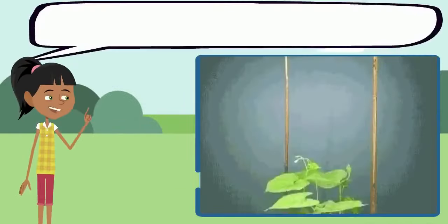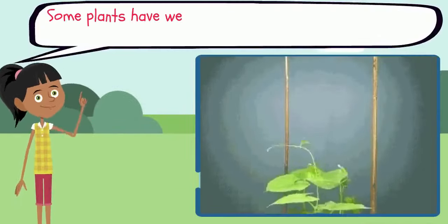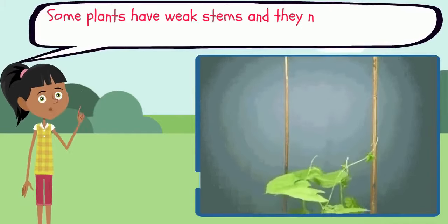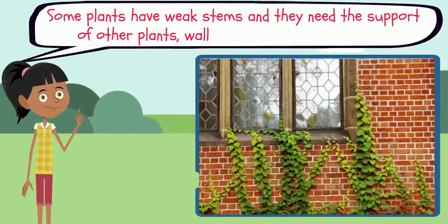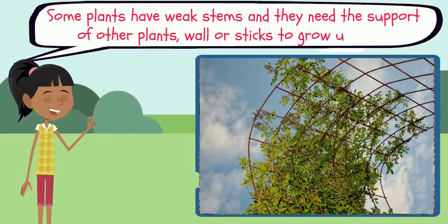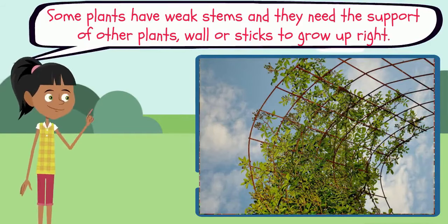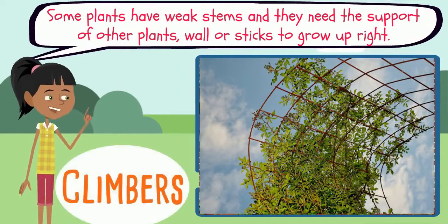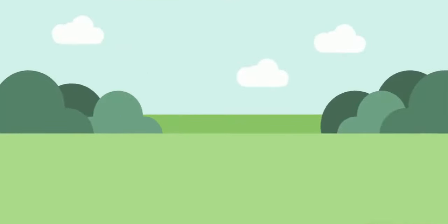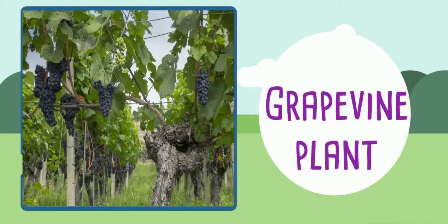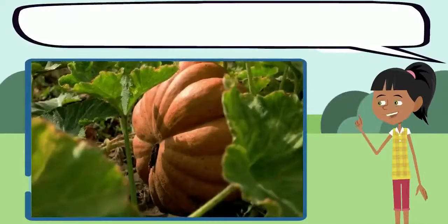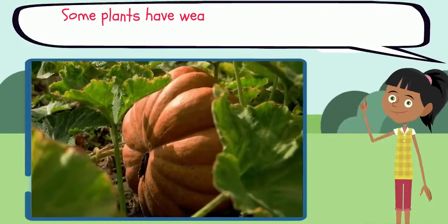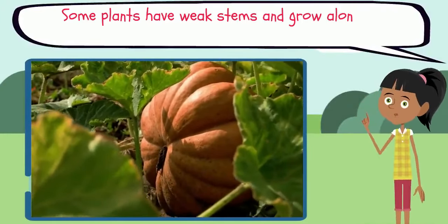Some plants have weak stems and need the support of other plants, walls, or sticks to grow upright. Such plants are called climbers. For example, grapevine plant and money plant.